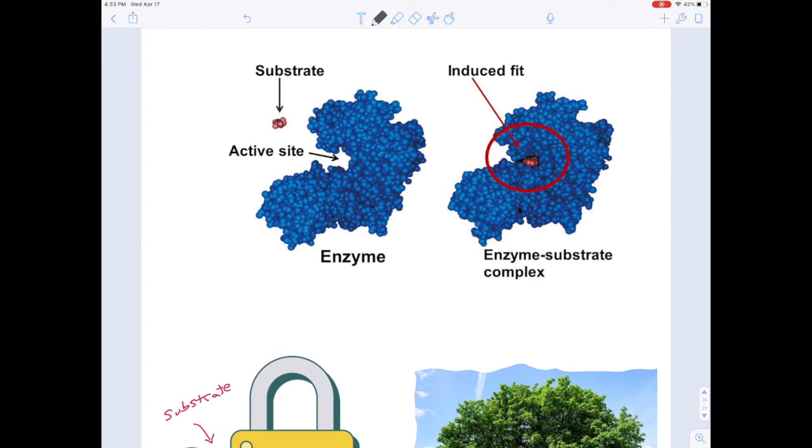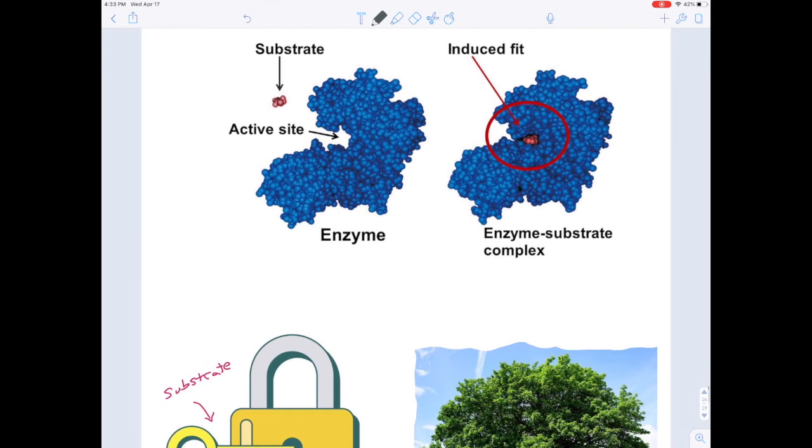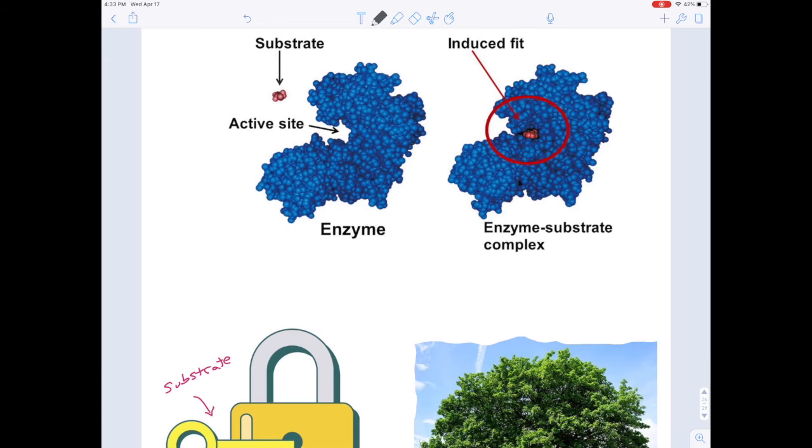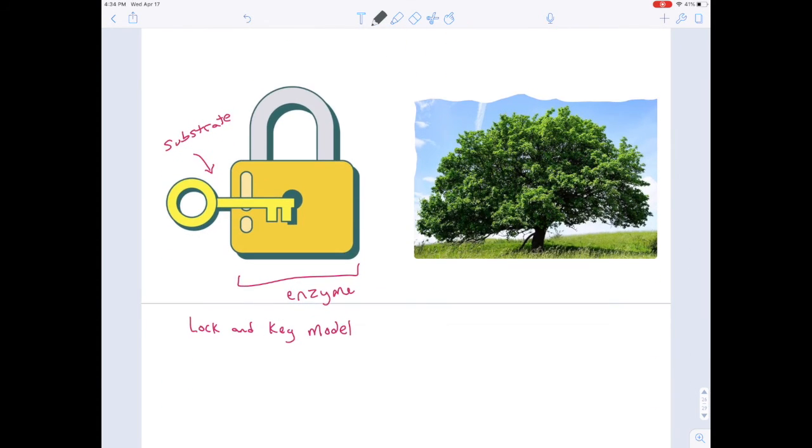You can see on this left side how the enzyme, the blue blob, has a sort of different shape. It sort of closed its mouth around the substrate. So it changed its shape a little, in the same way, so it can adapt its shape in the same way that the shape of the crown of a tree can adapt. And that's called induced fit. So when the substrate comes in and it makes the enzyme itself change its shape a little bit in order to wrap around it, that's called the induced fit model.